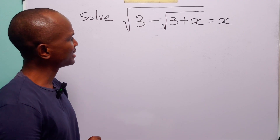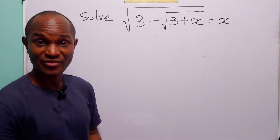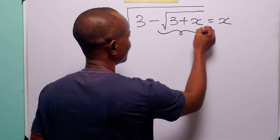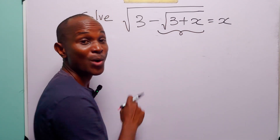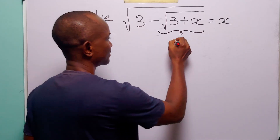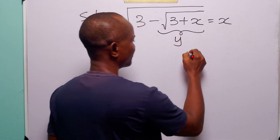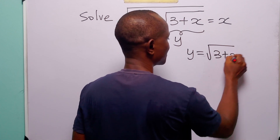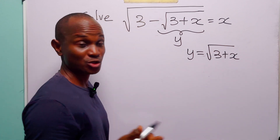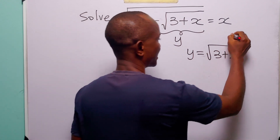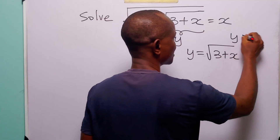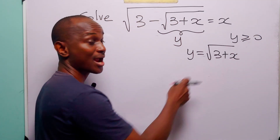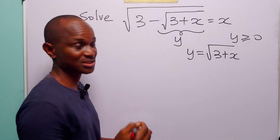Now to solve this radical equation, we are going to start with a very simple substitution. We are going to call this quantity — that is the square root of 3 plus x — y. So we have that y is equal to the square root of 3 plus x. Now this comes with the condition that y must be greater than or equal to 0, because each square root must always be positive.